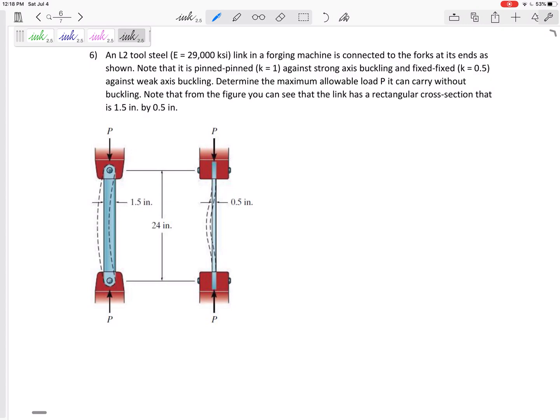Note that it is pinned-pinned against strong axis buckling and fixed-fixed against weak axis buckling. Imagine you had a ruler, a thin ruler, and its cross-sectional area. Note from the figure you can see the link has cross-sectional area - its cross-sectional area is 0.5 by 1.5 inches.